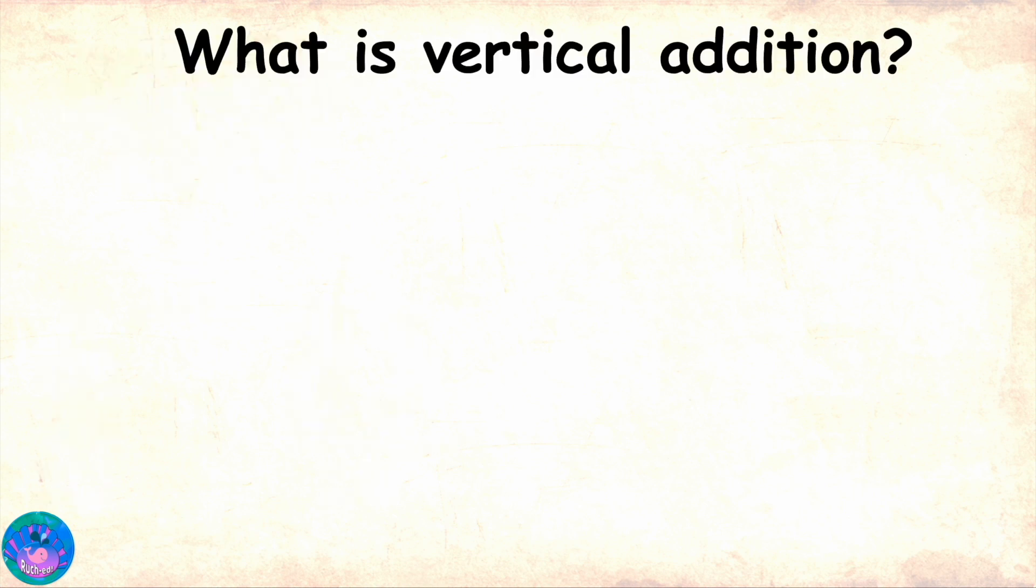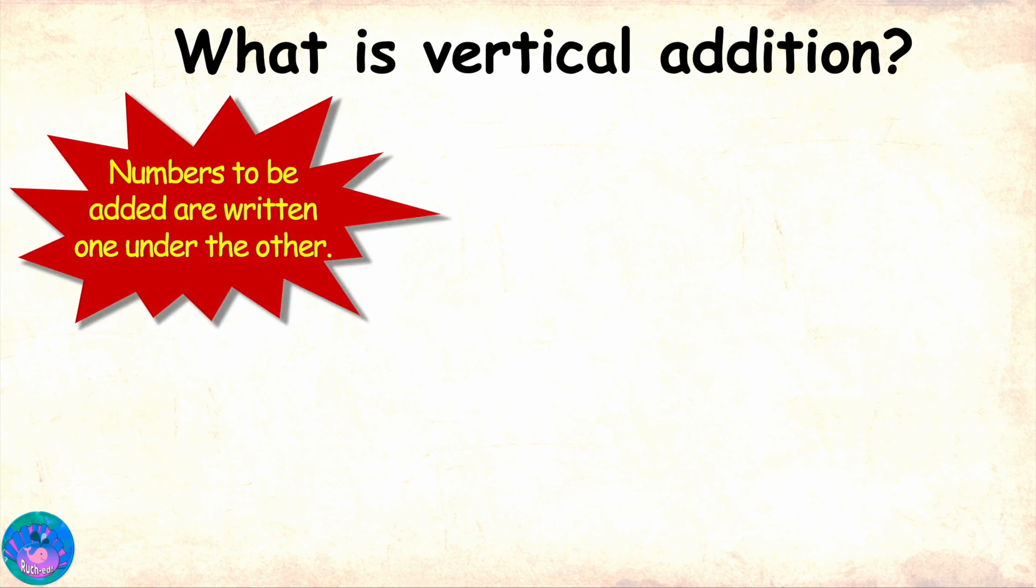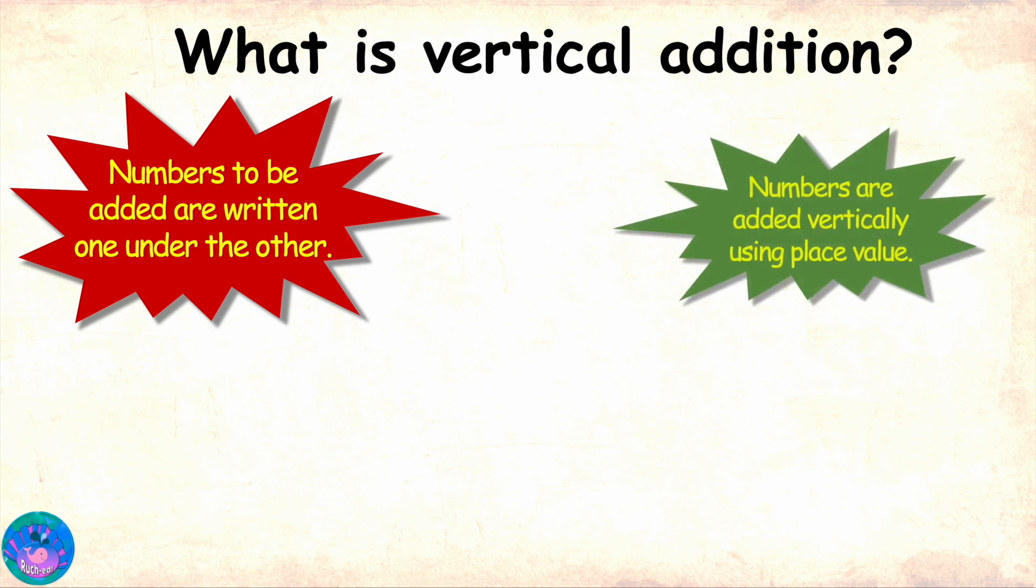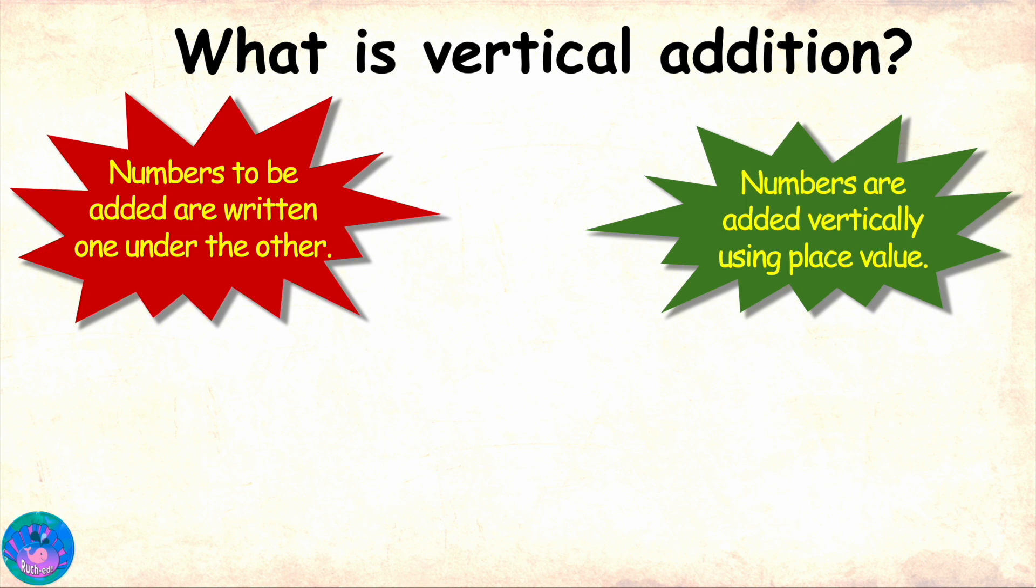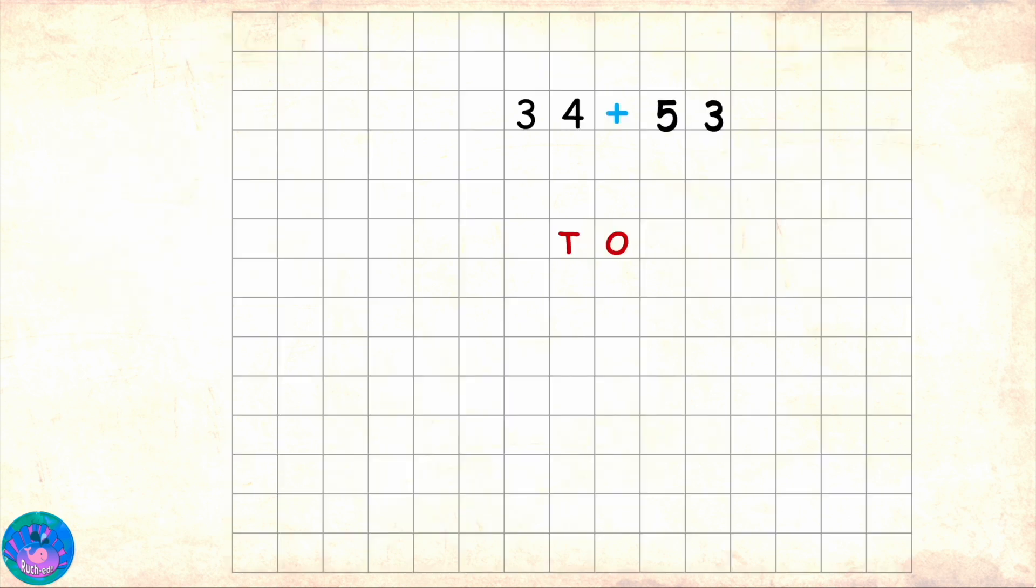Vertical addition is a technique in which numbers being added are written one under the other, so they are vertically stacked. Also, numbers are added vertically using place value. And you know what? This technique can even be used for adding very large numbers. Let's understand better with the help of an example. Suppose we have to add 34 and 53.